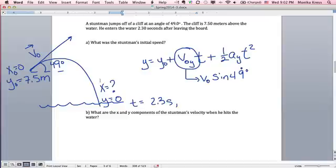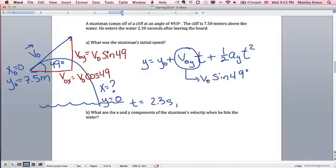So remember, this is equal to v0 times the sine of 49 degrees. Okay. And so what do we do with that information? Well, what we do is look at this component, which is equal to v0x, which is v0 times the cosine of 49. And this is v0y, which equals v0 times the sine of 49 degrees.